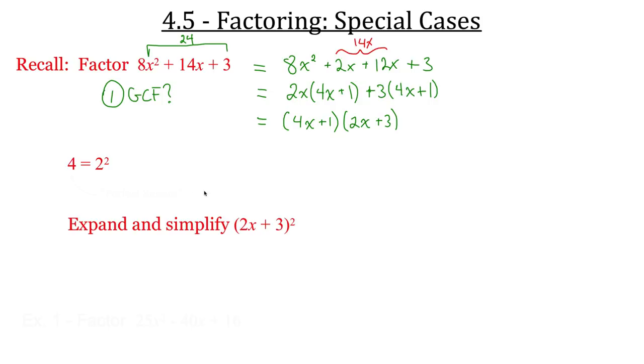So before we get any further I just want to talk about the number 4 and its relationship to 2². 4 has a special kind of name. Because 2² gives us a whole number of 4, we can call that a perfect square. It's a whole number. And what we're going to do is we're going to take a look at expanding and simplifying these kinds of scenarios where this is called a perfect square. So not only is the 4 a perfect square, but so is this bracket. This right here is a perfect square.